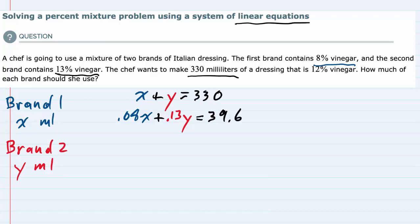We could use a graphing utility, substitution, or elimination. I'll go with elimination and clean up both equations by multiplying. For the bottom equation, I'll multiply by 100 to get rid of the decimals.